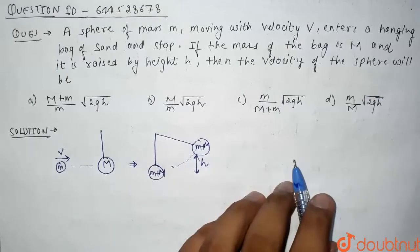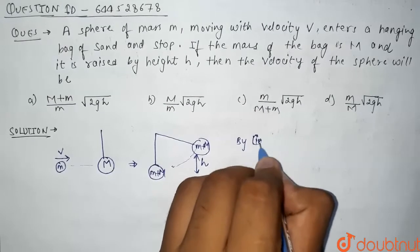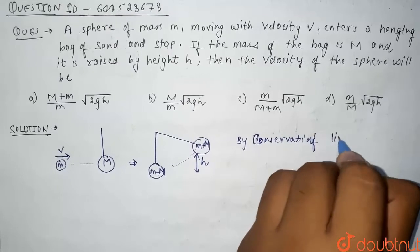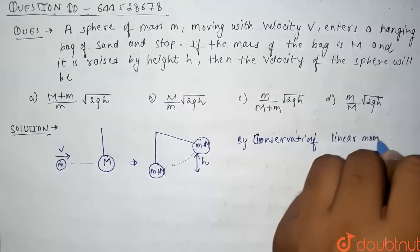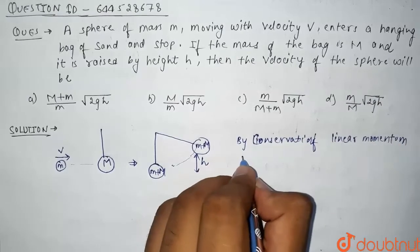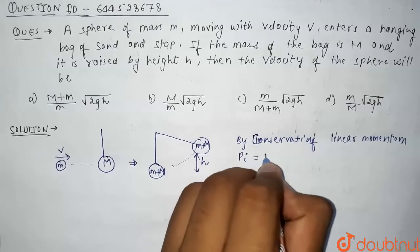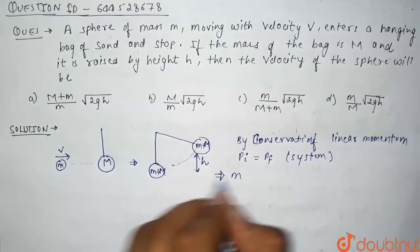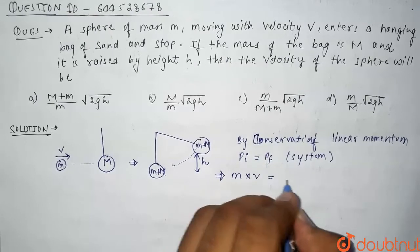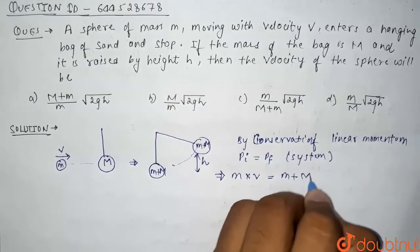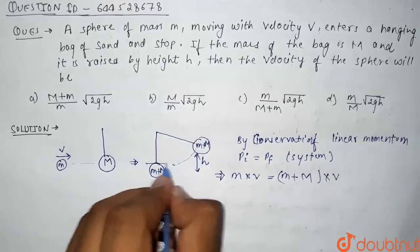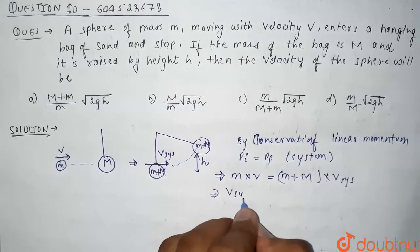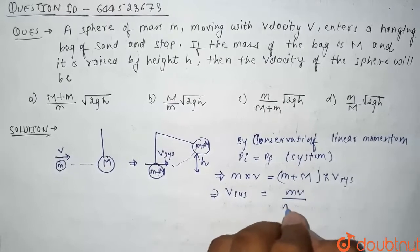By conservation of linear momentum, we can say that initial momentum is equal to final momentum of the system. The initial momentum is mass of the sphere times velocity of the sphere: m times v. The final momentum is (m plus capital M) times the velocity of the system. So the velocity of the system comes out to be: v_system = mv divided by (m plus capital M).